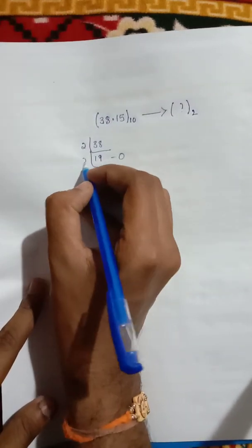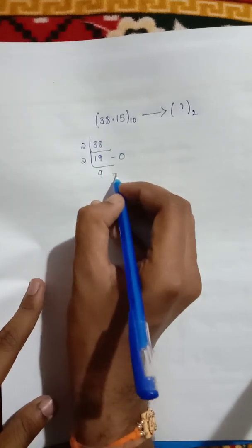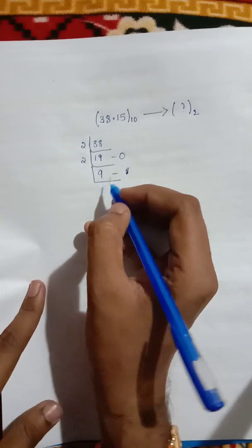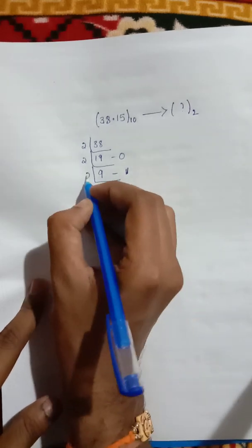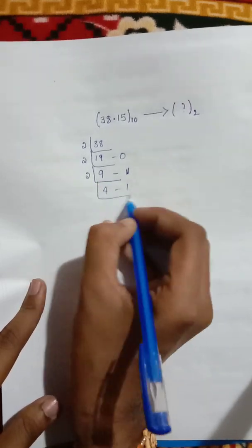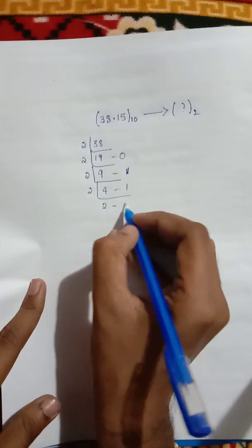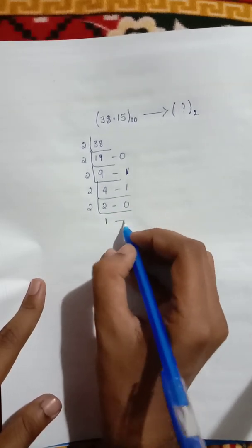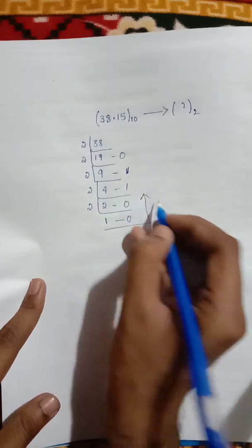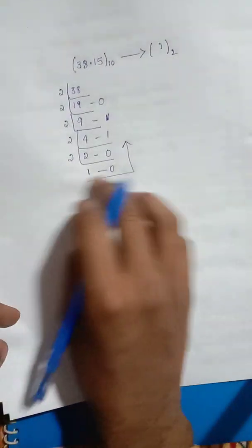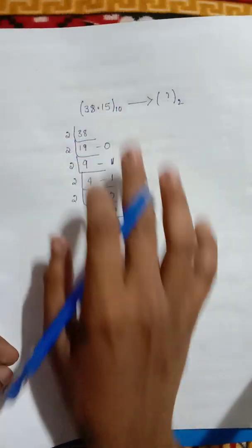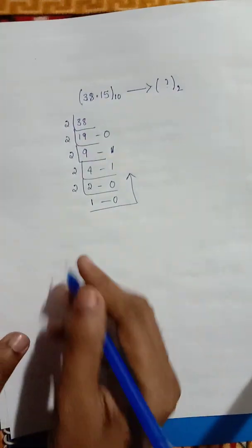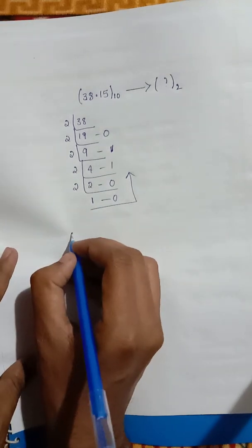Continuing the fractional multiplication: 0.3 into 2 is 0.6; 0.6 into 2 is 1.2, giving integer part 1; 0.2 into 2 is 0.4; 0.4 into 2 is 0.8. You continue multiplying 0.15 by 2 repeatedly, collecting the integer parts from top to bottom to get the binary fractional result.